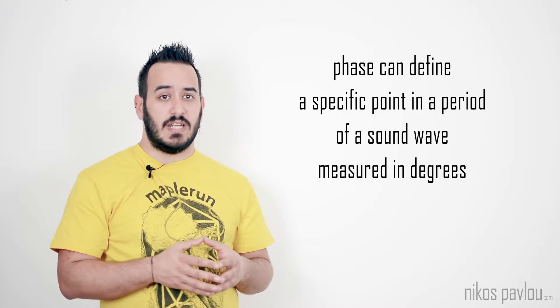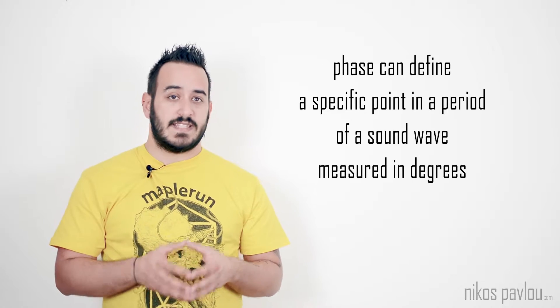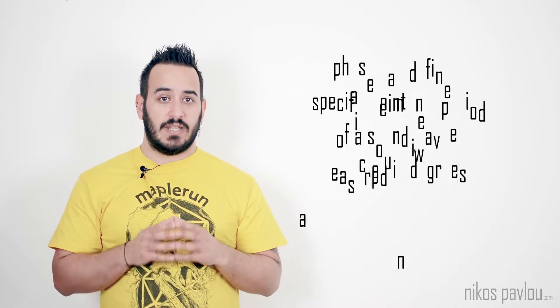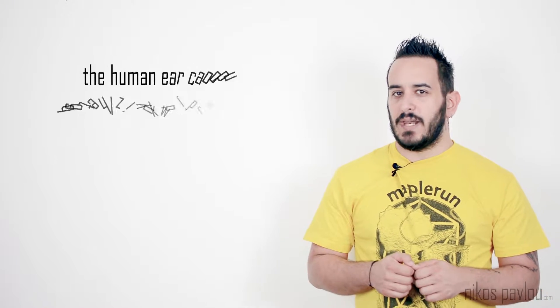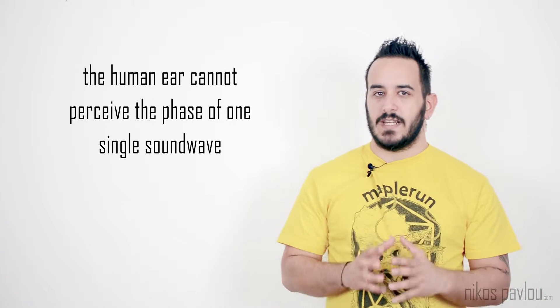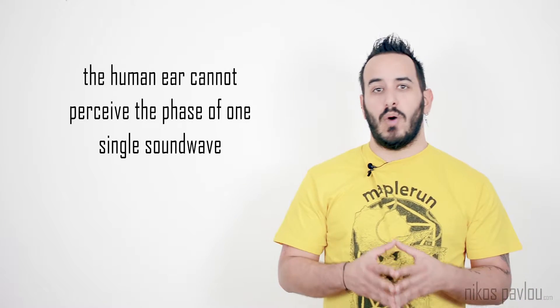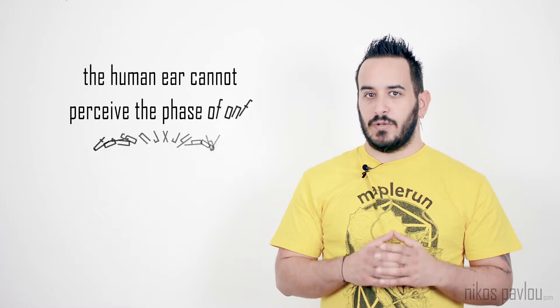Phase can be a bit tricky. It can define a very specific point in a period of a sound wave and it's measured using an angle in degrees. The human ear normally cannot hear the phase of a single wave, however, if there are two or more waves, things can get pretty confusing.